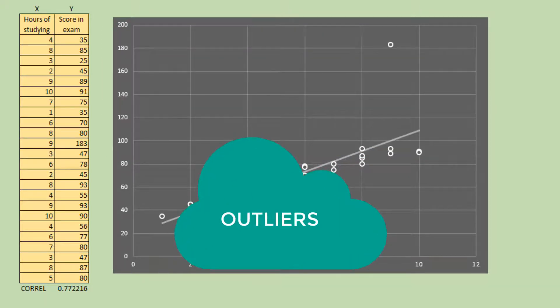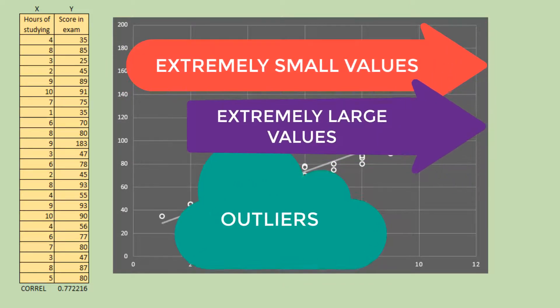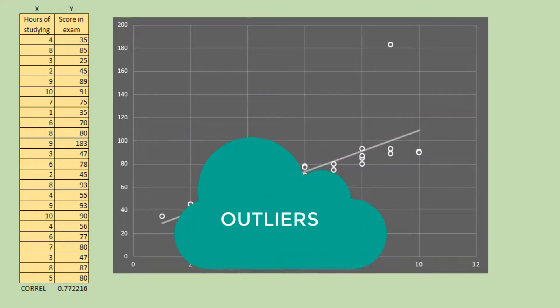Outliers are few numbers of observations of a sample that are extremely small or large in values. An outlier may indicate bad data. The data may have been coded incorrectly.